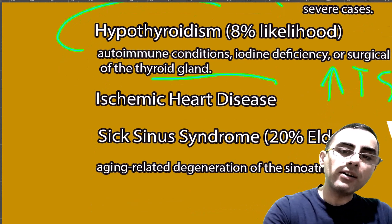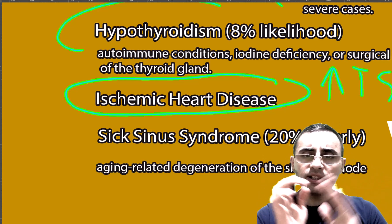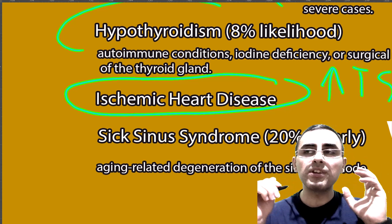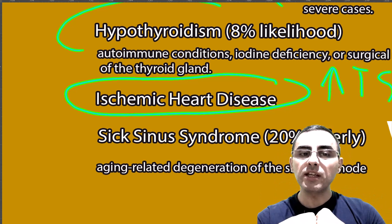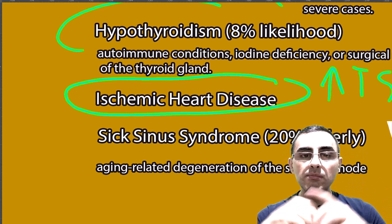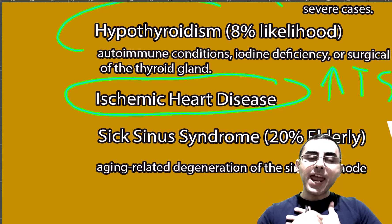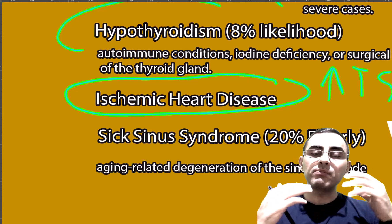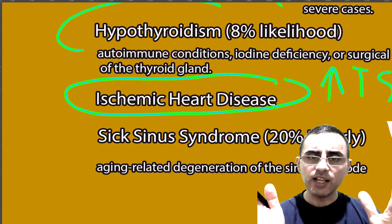Ischemic heart disease can also cause bradycardia, but we don't focus on it because bradycardia is not the major sign here. Such a person will typically present with angina, chest pain, or pressure and sensitivity in the chest during exertion, so bradycardia is not the primary complaint.